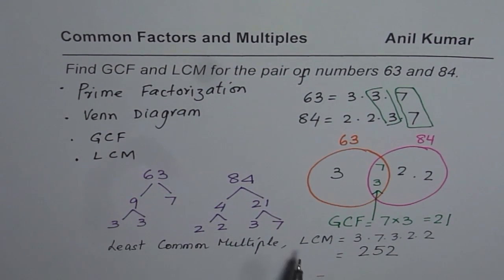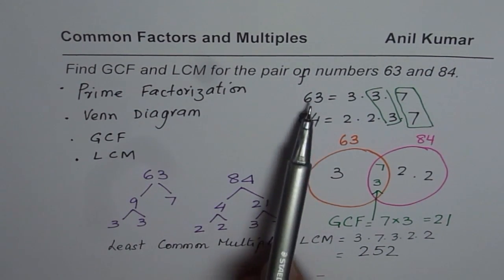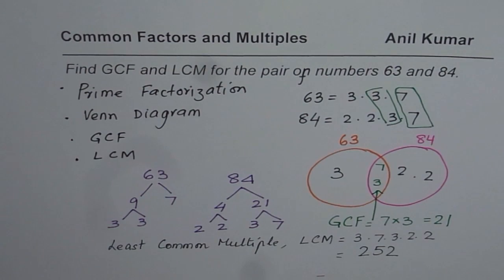On the other hand, least common multiple is the number which is the least amongst the multiples of these two numbers. So that is how they are related and I hope with the help of this Venn diagram, it is very clear how we can find greatest common factor and least common multiple using prime factorization.